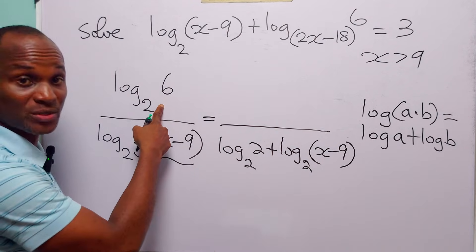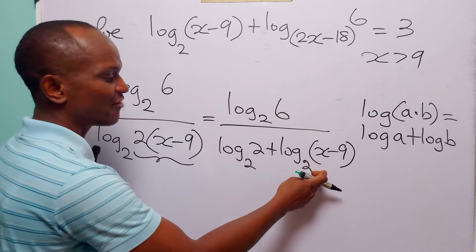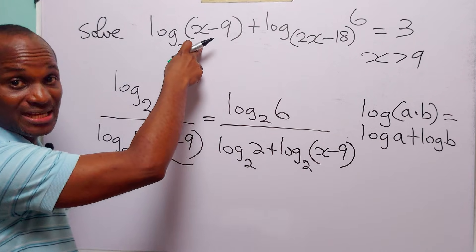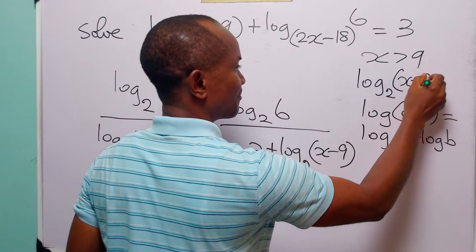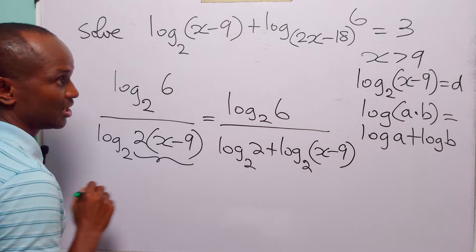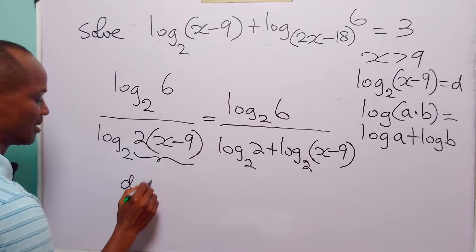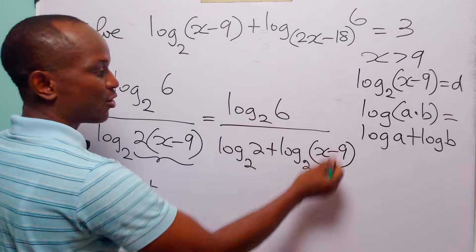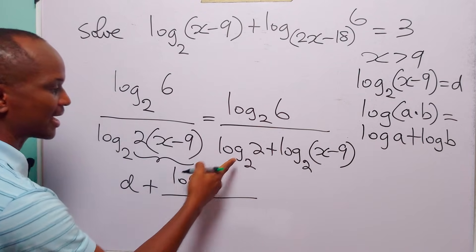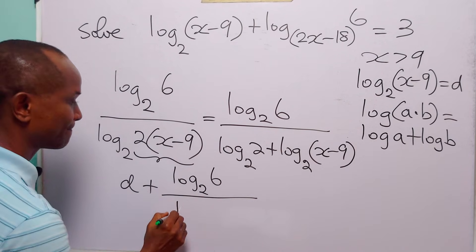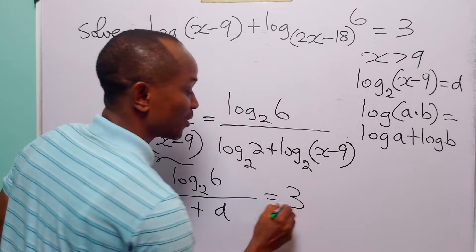And of course, in the numerator, we still have log to base 2 of 6. Now since we have log to base 2 of x minus 9 in the denominator and log to base 2 of x minus 9 elsewhere, let us do a substitution. Let log to base 2 of x minus 9 be equal to the letter D. With this substitution, we can now rewrite the original equation as D plus this second term, which is log to base 2 of 6 divided by log to base 2 of 2, which is 1, plus D.